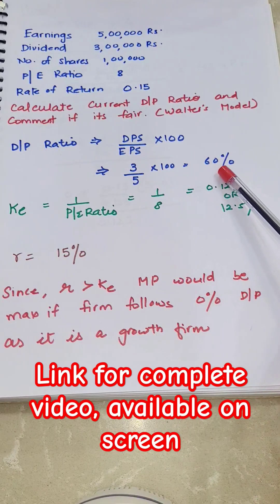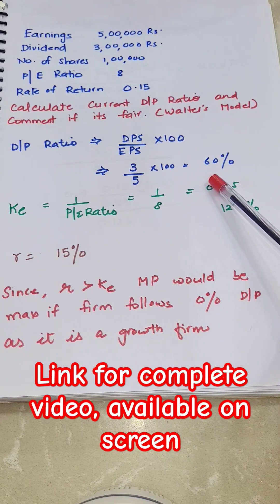So 3 by 5 into 100 is 60%, that is the current DP ratio of the firm.